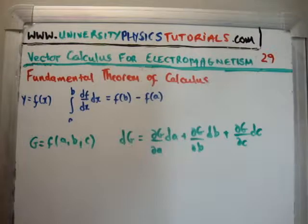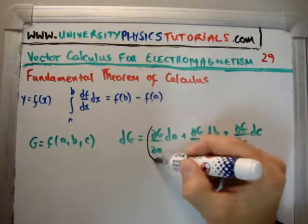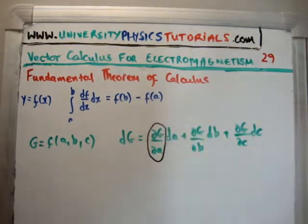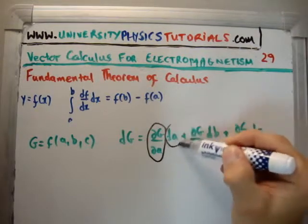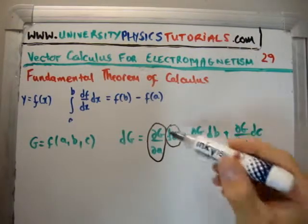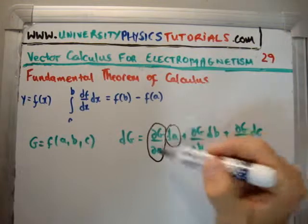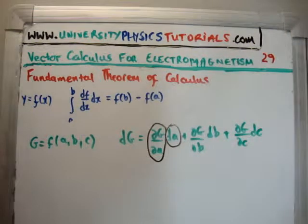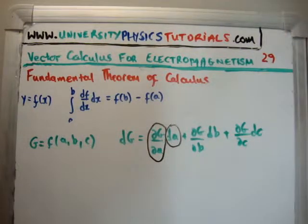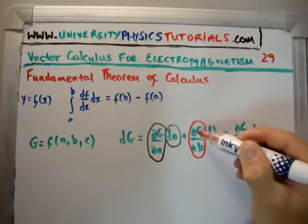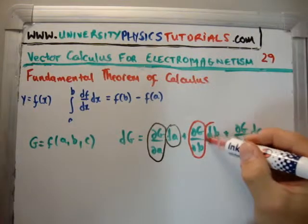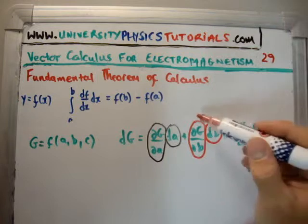Now, you ask yourself, does this make sense? Of course, because this is the rate of change of g with respect to a. And, this is how much you move in the a direction. So, if you multiply the total together, we get the change in g. This is the infinitesimal change in g with respect to b. If holding everything else fixed,